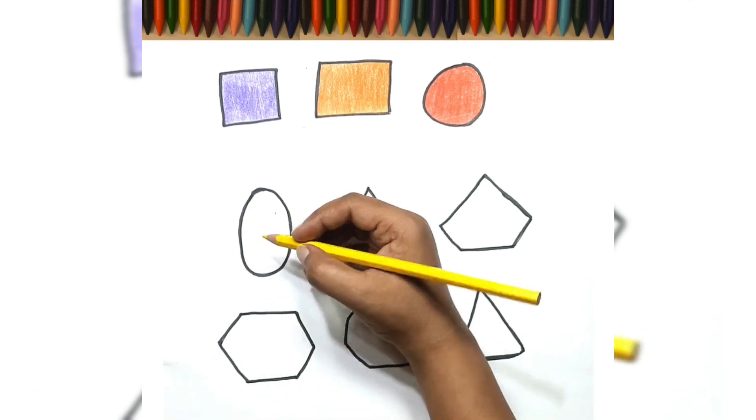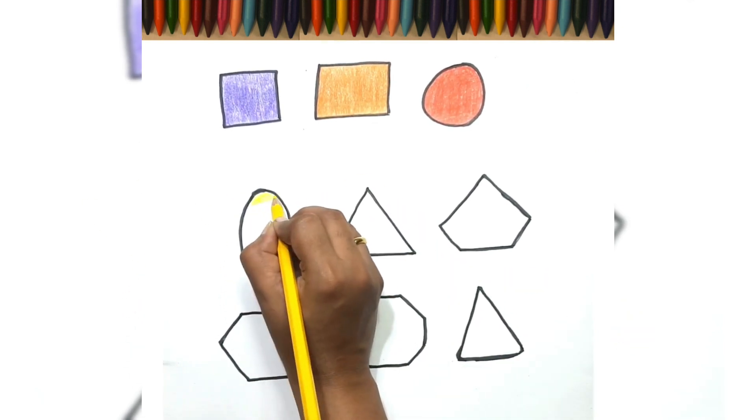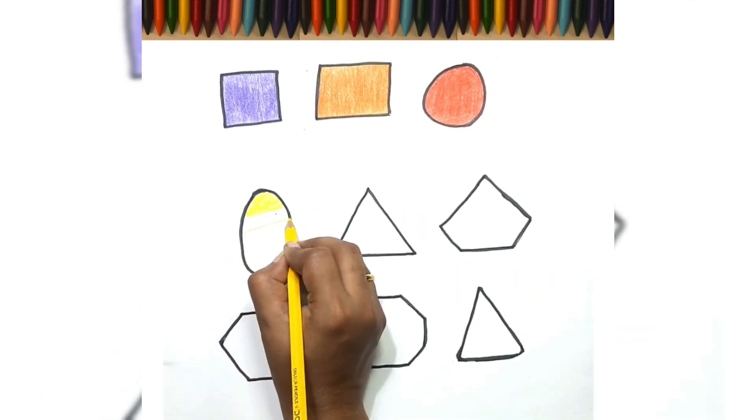An oval is elongated circular shaped with curved but not perfectly circular.